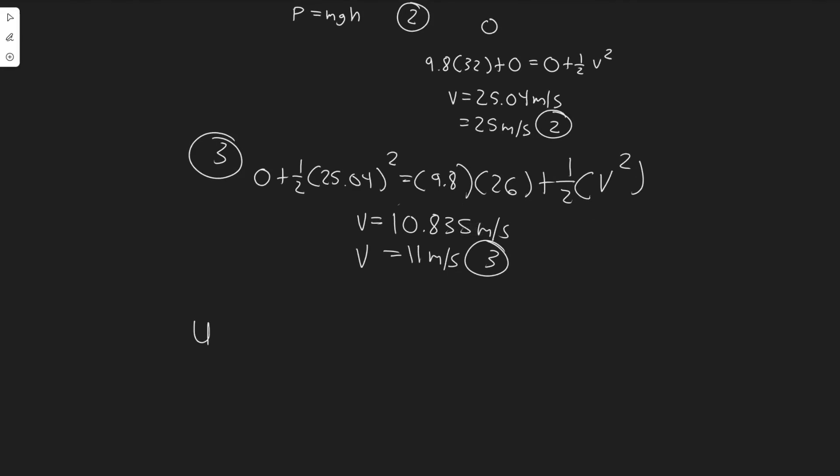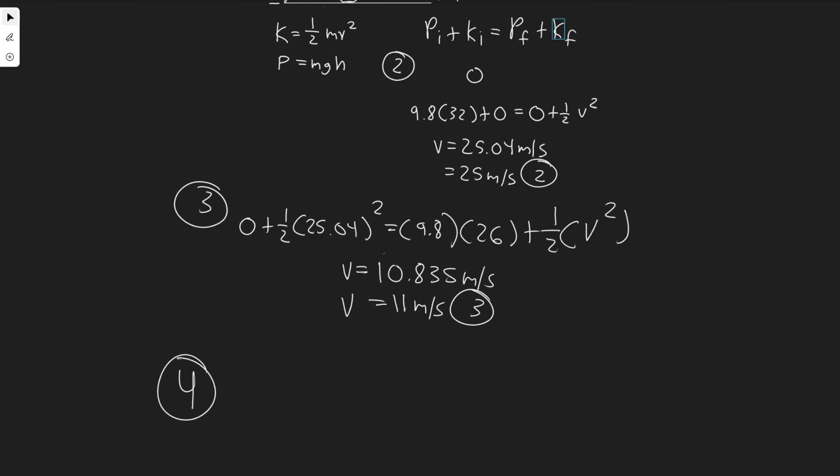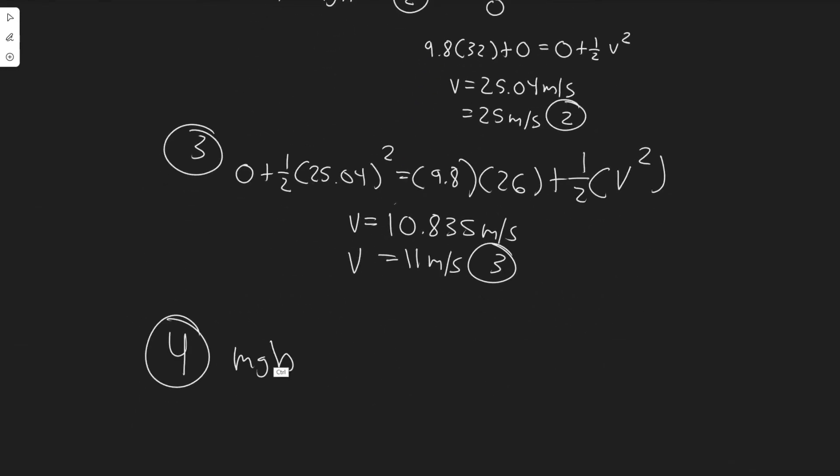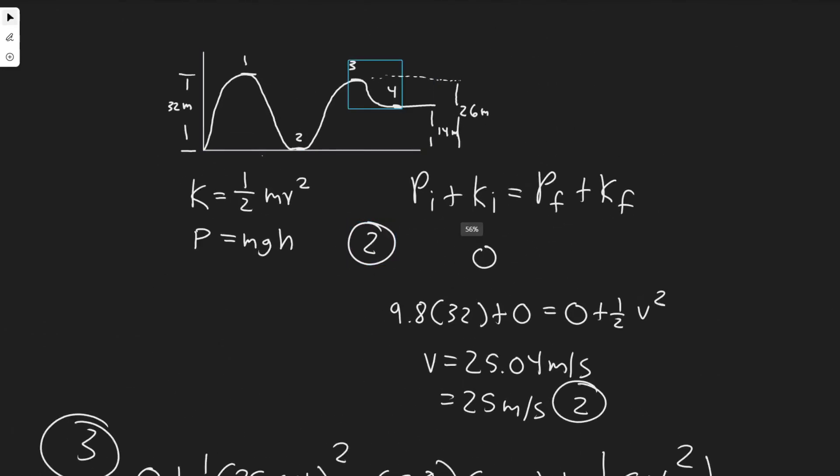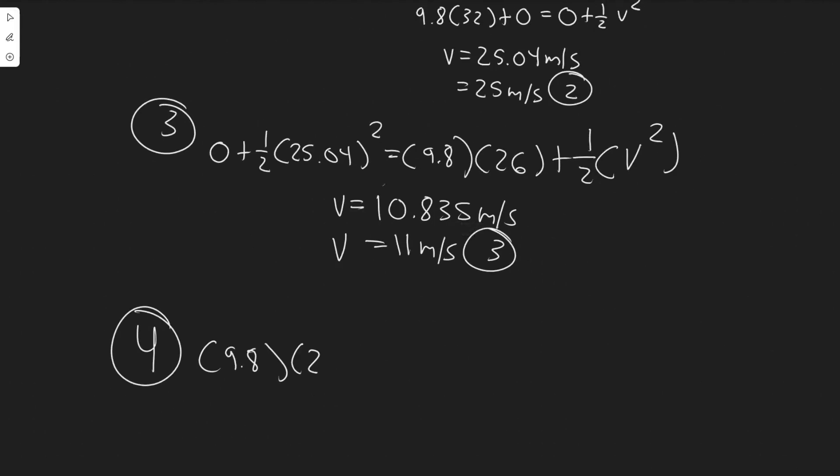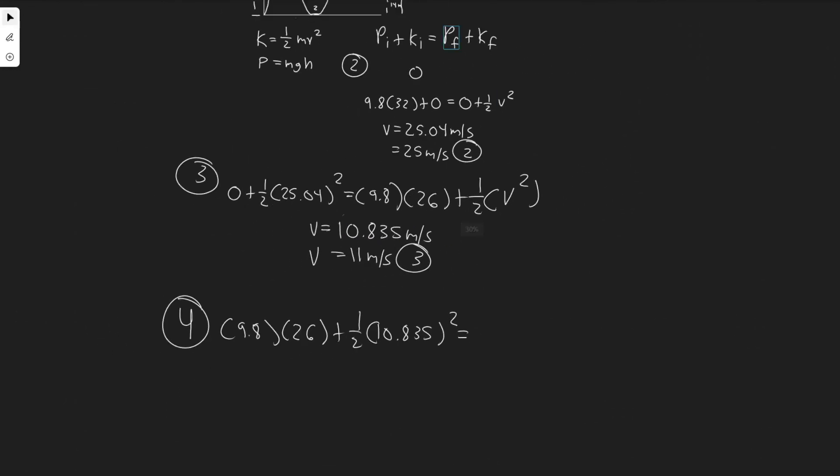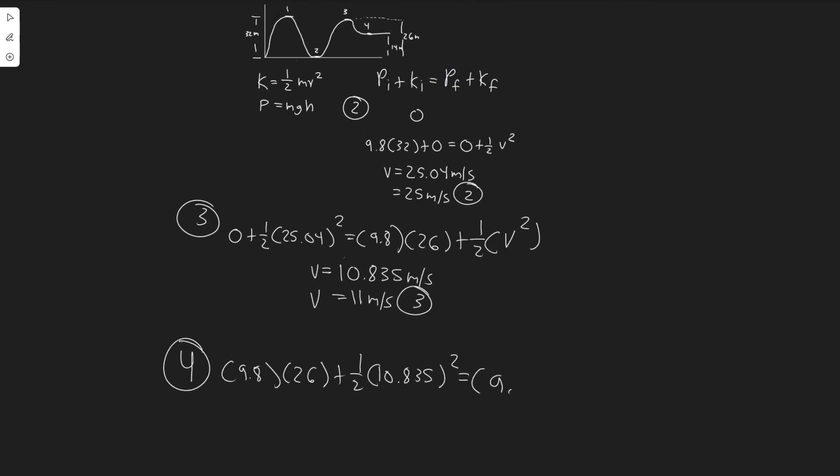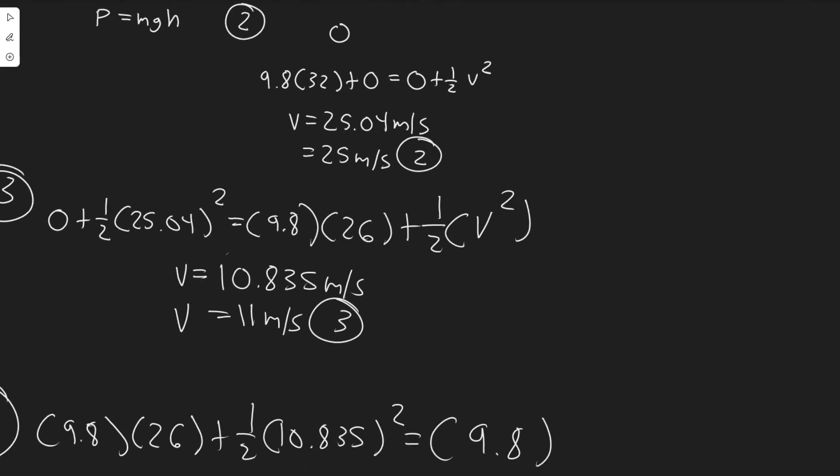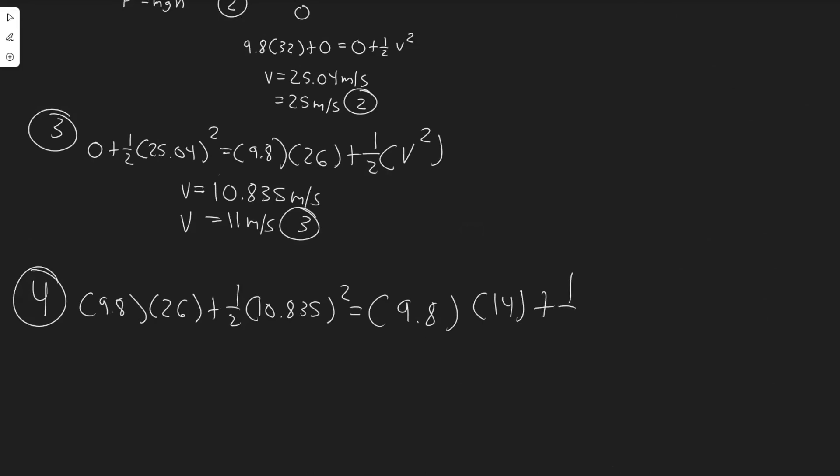So last, we do the same thing. Let's go ahead and do four. Once again, none of them are going to cancel. What's the initial potential energy? It's MGH. We don't have the M though, so it's just G times the height. What is our height at the initial point? Well, we start at three and we're going to four. So at three, it's going to be 9.8 times 26 plus one half V squared. We don't need the M. The velocity here is what we just solved for, so I'm going to use the more exact, 10.835 squared equals. And then what's the final potential? M cancels. So we just have the G, which is 9.8, and then we're going to multiply that by the height. So the height at this point, relative to the same point is 14. And then plus one half V squared.